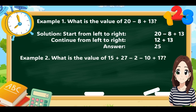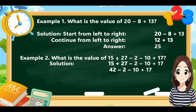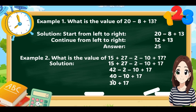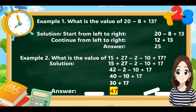Example 2: What is the value of 15 plus 27 minus 2 minus 10 plus 17? Working left to right: 15 plus 27 equals 42; then 42 minus 2 equals 40; then 40 minus 10 equals 30; then 30 plus 17 equals 47. So the final answer is 47.